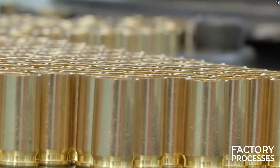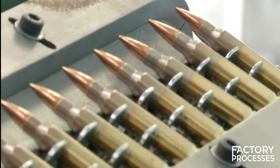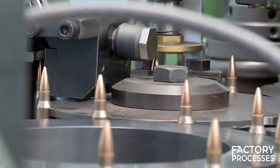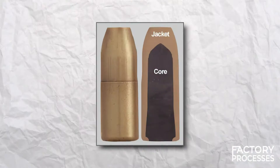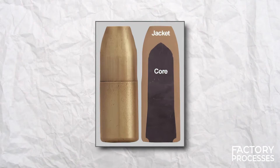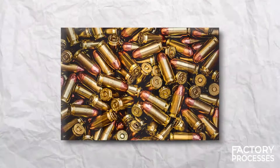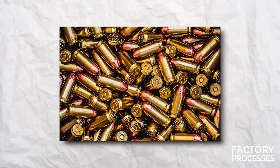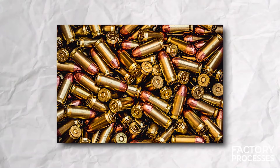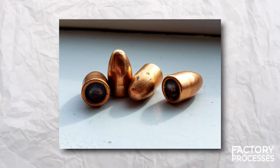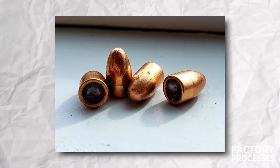Nevertheless, a bullet consists of more than just its core — it also includes another essential component known as the jacket. While the core primarily influences the bullet's weight and penetration, the jacket serves as the outer layer that enhances its shape, strength, and in certain instances, its expansion upon impact with a target.